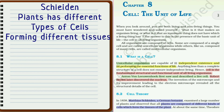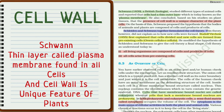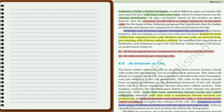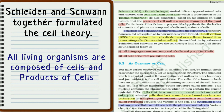Schleiden was a German botanist who observed that all plants were composed of different kinds of cells which form the tissues of plants. Schwann, at the same time, was a British zoologist who conducted a comparative study between plants and animals, and found that all cells had a thin outer layer called the plasma membrane. He also found that plant cells had a unique character — a cell wall. Together, Schleiden and Schwann gave the first statement of cell theory: all living organisms are composed of cells and products of cells.